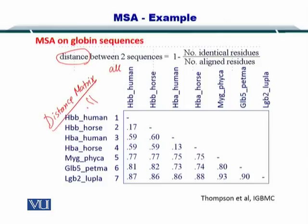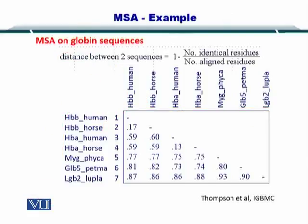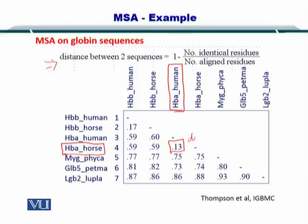The distance matrix is provided here, with multiple types of globins listed. Once you compute the distance between each of these proteins, you can fill up this matrix. This matrix is already filled using the formula after doing pairwise sequence alignment. You will notice that HBA horse — that is, globin from the horse — is very similar to HBA human, with a distance of just 0.13. This very small distance means these two proteins are very similar.